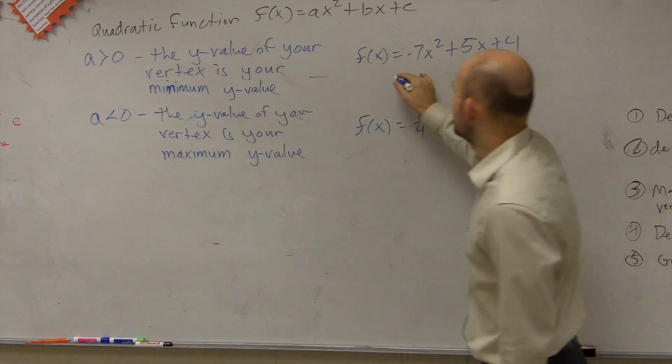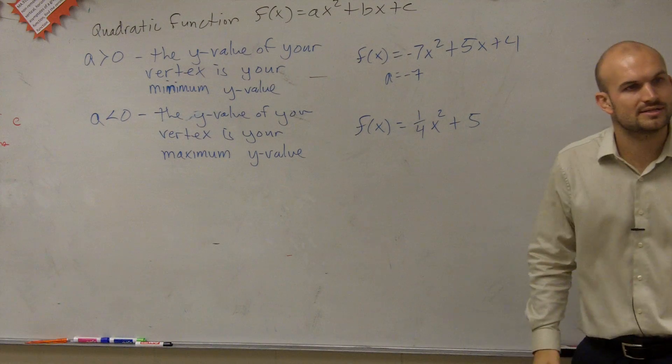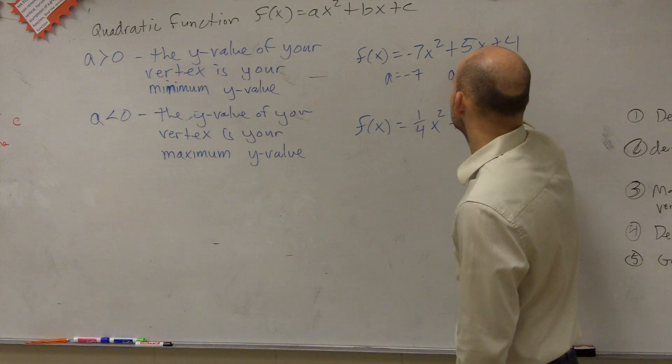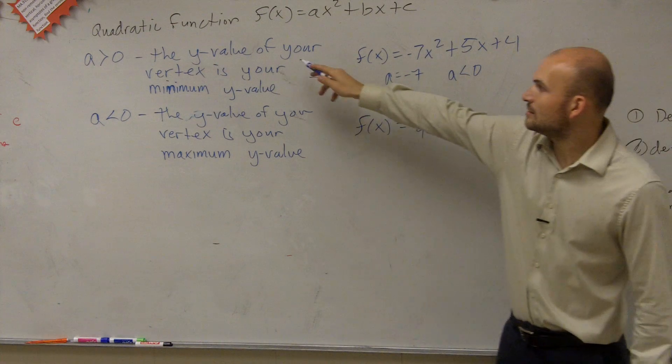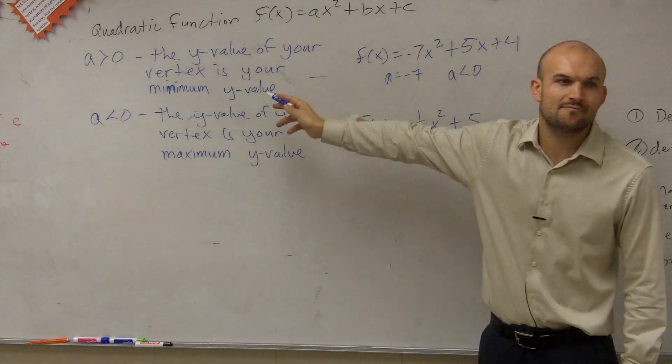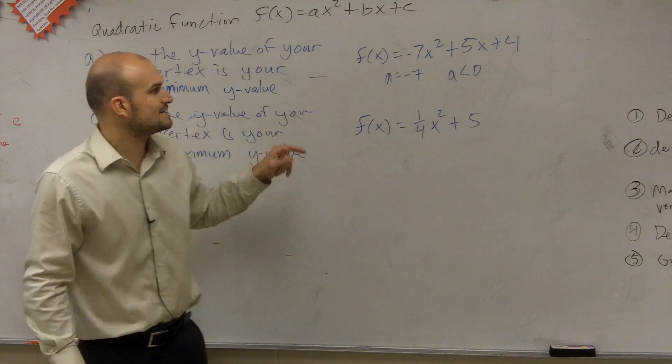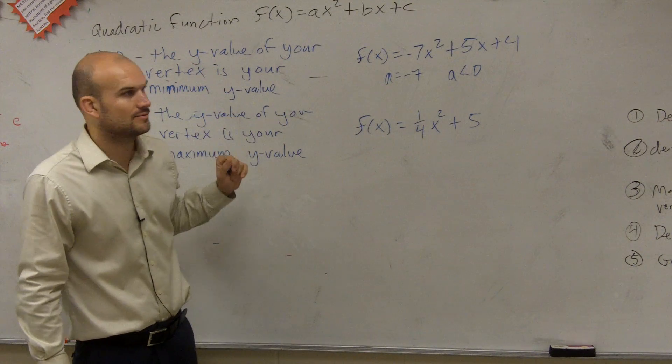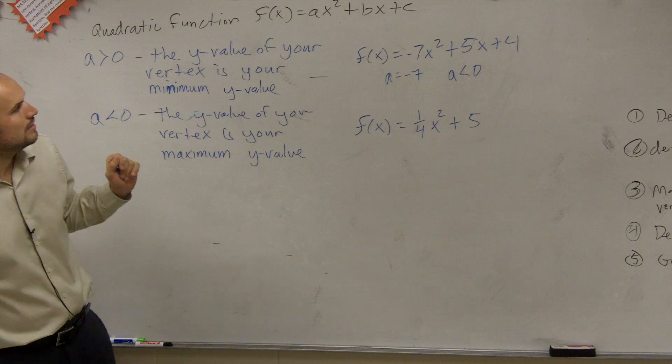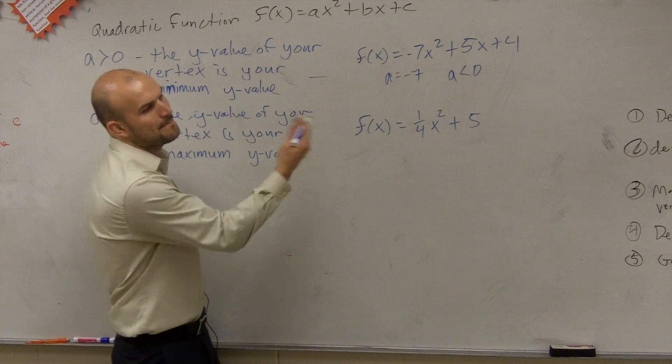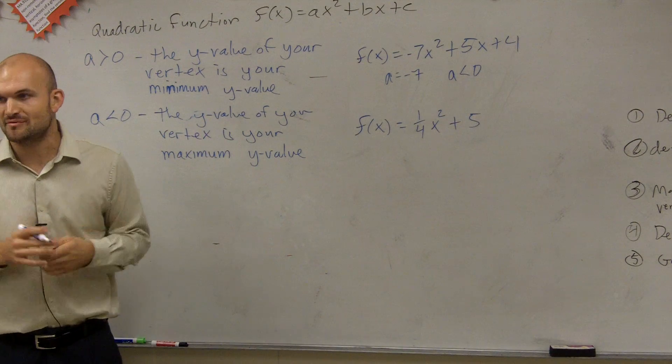Right? So you could say a is equal to negative 7. And is that less than 0 or greater than 0? You could say a is less than 0. So therefore, I'm going to have my vertex. I don't know where the vertex is for this problem yet. I didn't figure that out. But I do know that my vertex is going to be a maximum value.